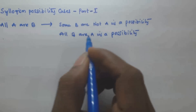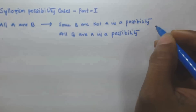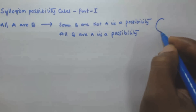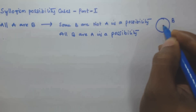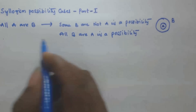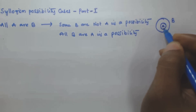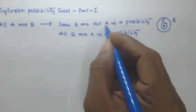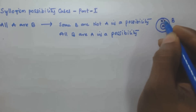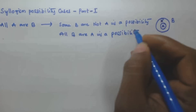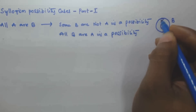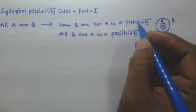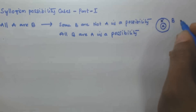To help you understand these two possibility cases, I will draw the Venn diagram. It is given that All A are B — so here B is the outer circle and A is inside it. From this diagram, some B are not A is clearly visible in the portion of B outside A. But why is it a possibility and not a certainty?